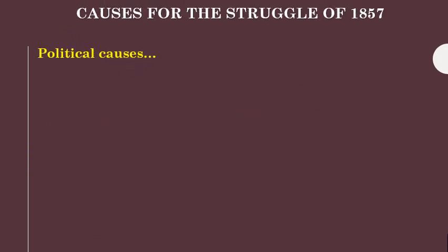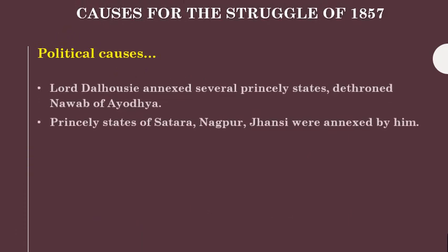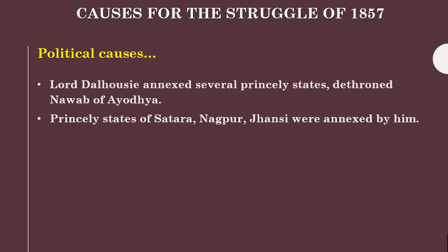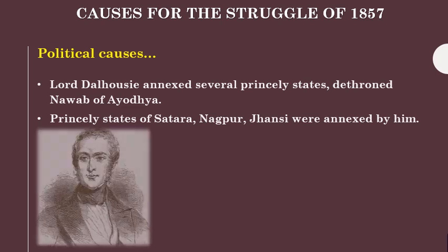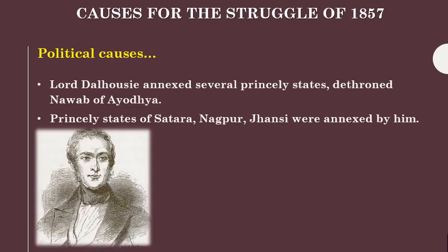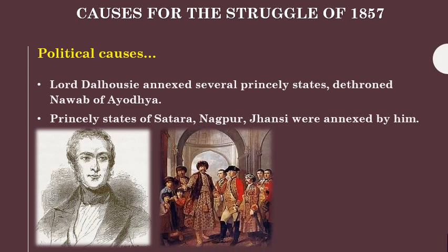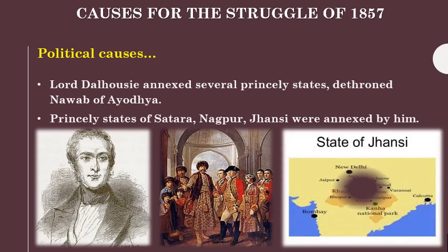Political causes: After 1757, the British took charge of many Indian states. Later, Lord Dalhousie annexed many princely states on various grounds. The Nawab of Ayodhya was dethroned, and the princely states of Satara, Nagpur, and Jhansi were annexed.